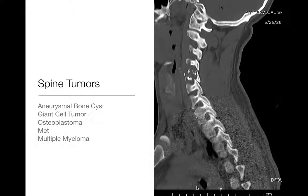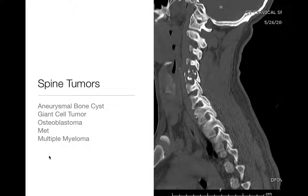Common things to think about for spine lesions: aneurysmal bone cysts, giant cell tumors, osteoblastoma, and in older adults, mets and multiple myeloma. This is not an exhaustive list. Chondrosarcoma and osteochondroma in multiple hereditary exostosis are rare with more typical appearances. Use age to help: younger patient — ABC or osteoblastoma; older patient — mets or multiple myeloma.